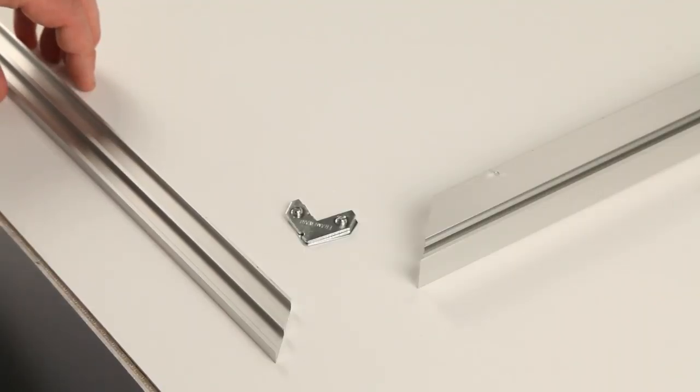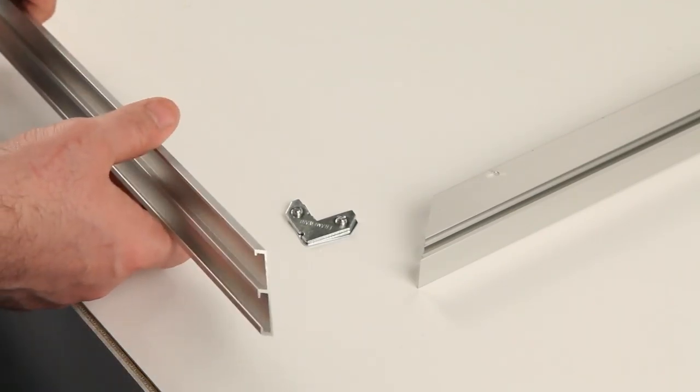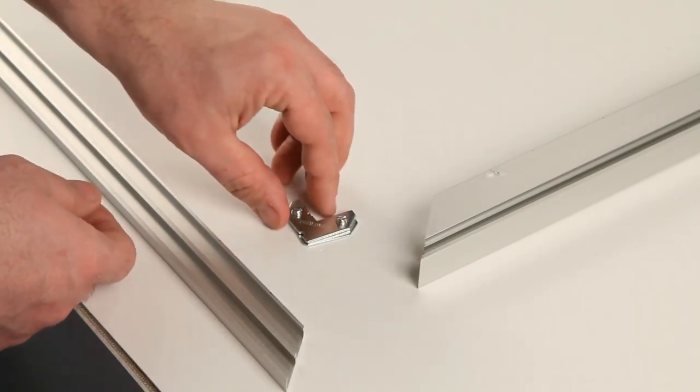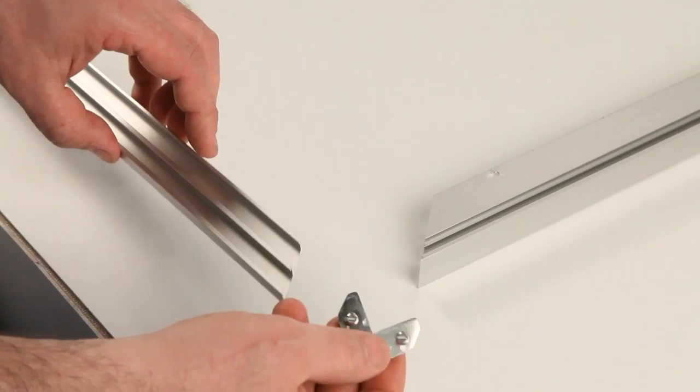You'll notice that one of the Euro-style slide-in frame rails is different from the others. This rail is thinner, so when the frame is assembled, it creates a slot opening and room for your graphic and materials to slide in.